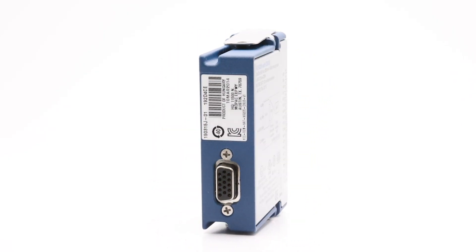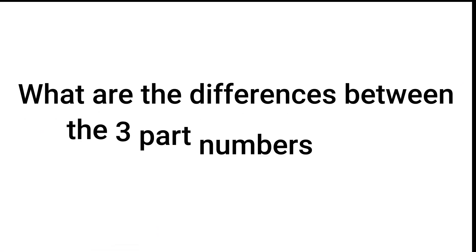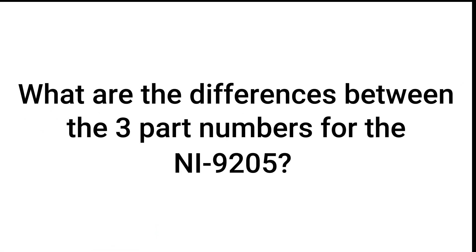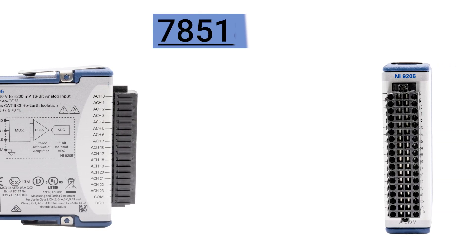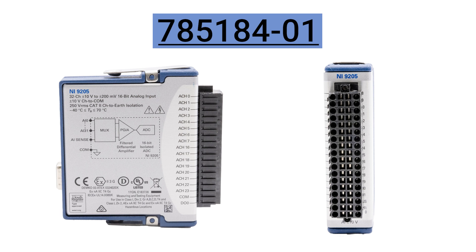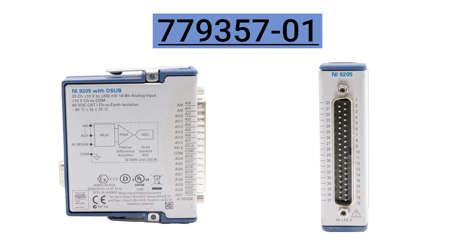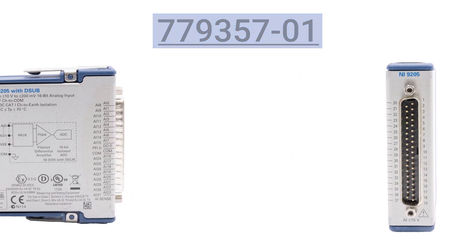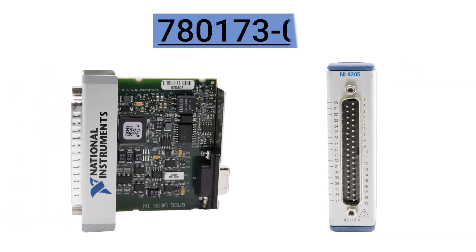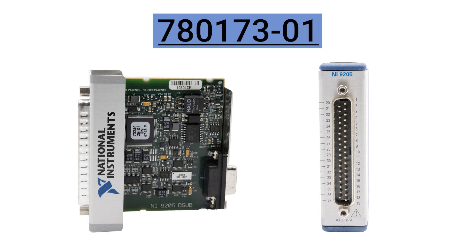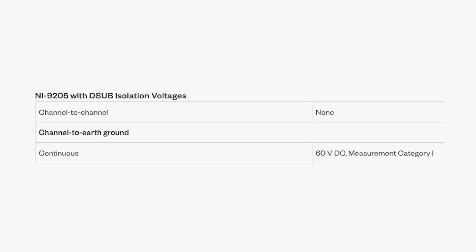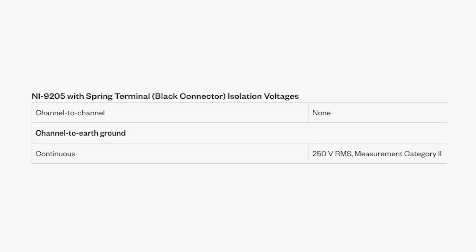Here are some common questions about the NI9205. What are the differences between the three part numbers? The NI9205 module has several connector types available. Part number 785184-01 has spring terminals and is not conformal coded. Part number 779357-01 has D-sub front connectors and is not conformal coded. Part number 780173-01 has D-sub front connectors and is the only conformal coded version. D-sub variants have 60VDC channel-to-earth ground isolation, while the spring terminal variant has 250V RMS channel-to-earth ground isolation.